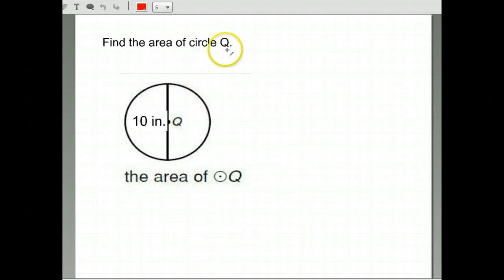All right, let's find the area of circle Q here. Again, what's the area of a circle? It's pi times the radius squared.